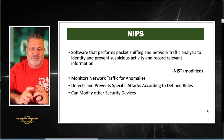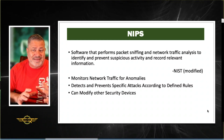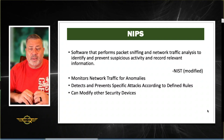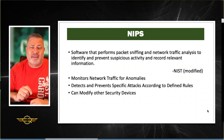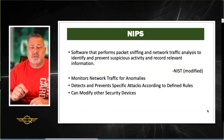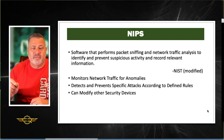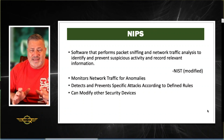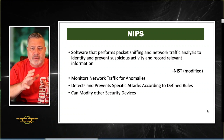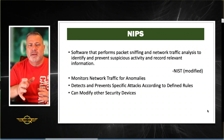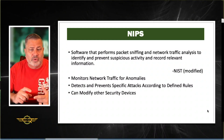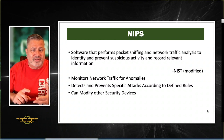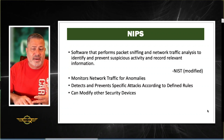According to NIST — this is a slightly modified definition — a NIPS is software that performs packet sniffing and network traffic analysis to identify and prevent suspicious activity and record relevant information. The prevention system is active; it will actively make changes to your network to prevent the attack. A NIPS monitors network traffic for anomalies, detects and prevents specific attacks according to defined rules, and can modify other security devices.